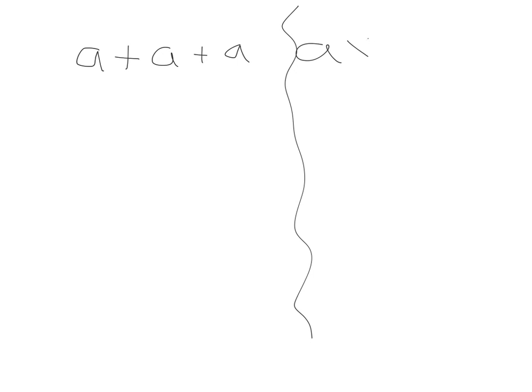If we see A plus A plus A versus A times A times A, what's the difference? A plus A plus A — imagine they're apples: one apple plus another apple plus another apple, so we simplify to three apples, giving us 3A. Whereas A multiplied by A multiplied by A uses our rules of indices — each A has an invisible one on its shoulder, so we add them and get A cubed.